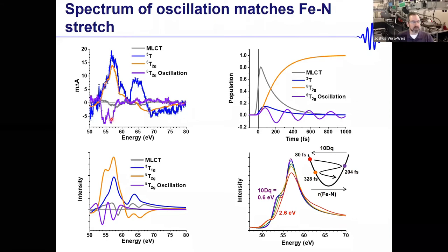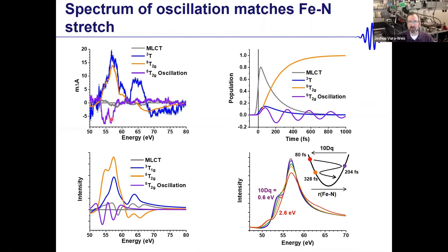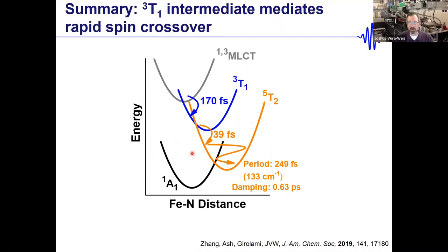Although we can't do scattering or EXAFS at this energy range, there's enough information content in the absorption spectrum to extract structural information. In summary: we showed that a triplet intermediate mediates rapid spin crossover, and we can extract both the period and the specific vibrational mode responsible from the oscillating transient spectrum.